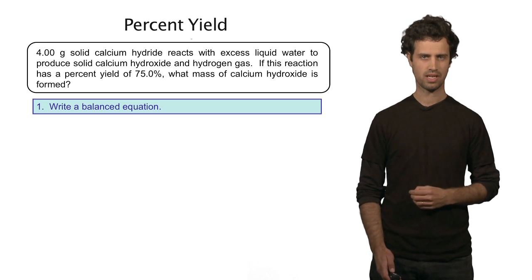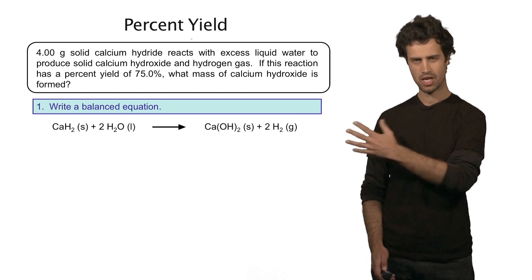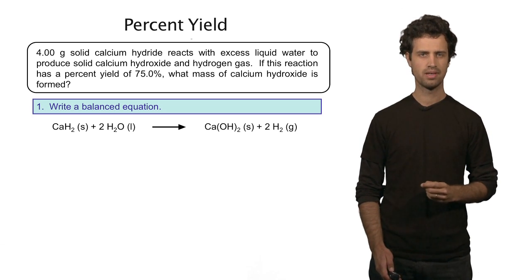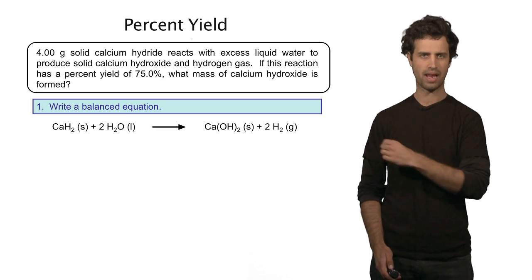The first thing to do in this particular case is to write down the balanced equation. And here it is. The reagents are calcium hydride and water and the products are calcium hydroxide and hydrogen gas. This is the balanced equation.